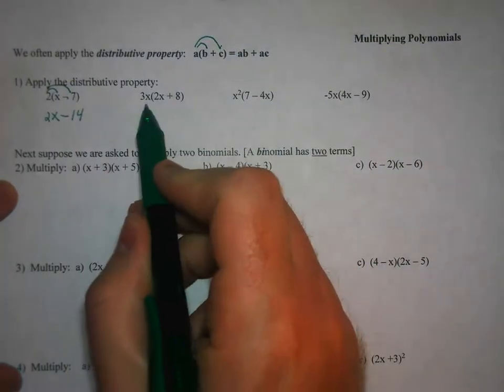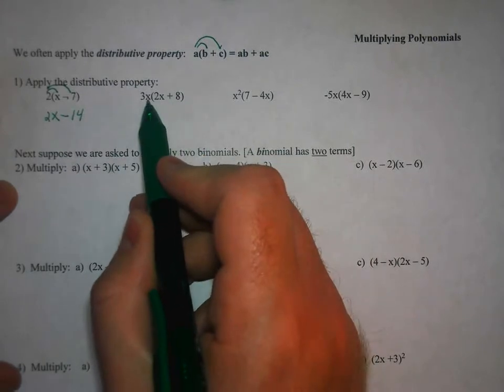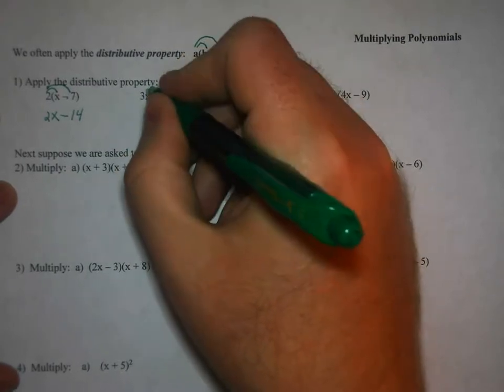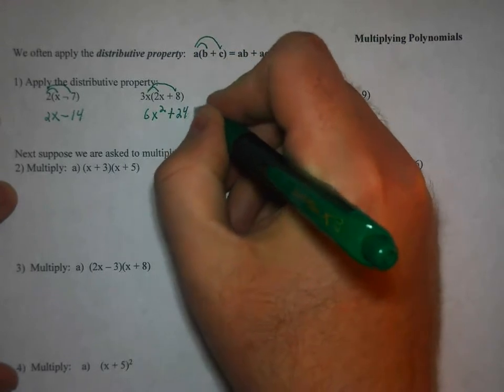In the second one, we have 3x times the quantity 2x plus 8. So 3x times 2x, that will give you 6x squared. And then 3x times 8 is plus 24x.